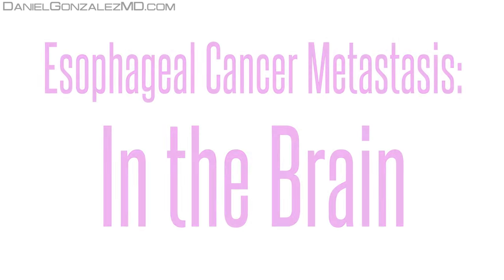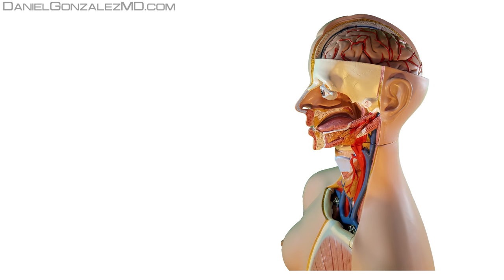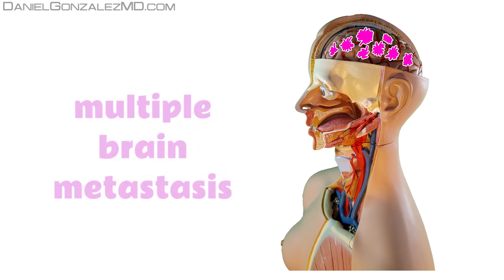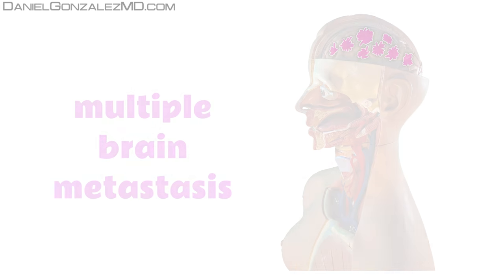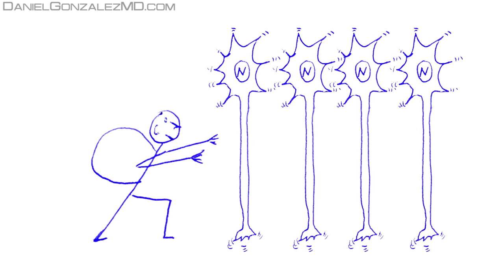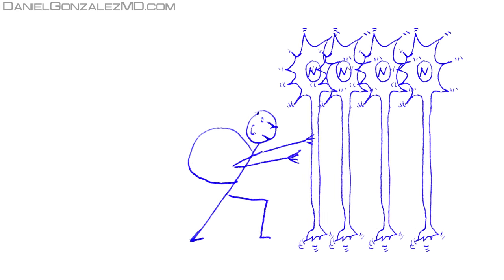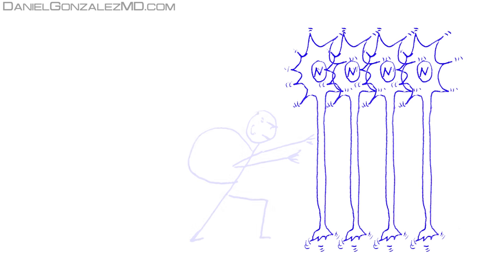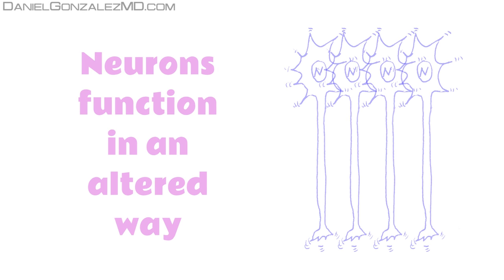Metastasis in the brain: When groups of cancer cells get to live within the brain, they also make metastases bigger and bigger. As they push neighboring neurons, these neurons begin to function in an altered way, so two types of symptoms may occur.